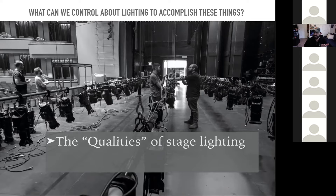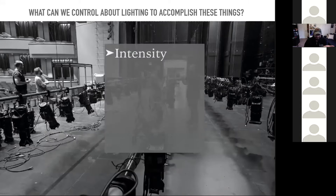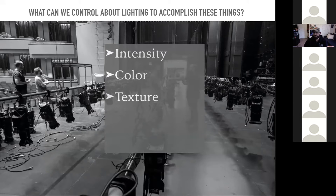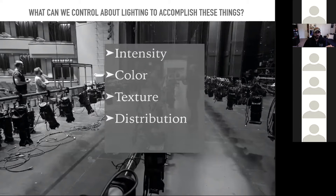For example, intensity — that's probably the most obvious thing we can control about light. Next would be color, texture — this includes gobos, focus, sharpness — then distribution, or where the light is coming from, and movement.